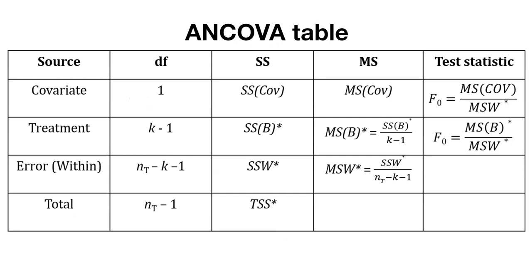Here's the table that tells us the test statistics we're interested in. ANCOVA allows us to carry out two hypothesis tests: one for the covariate and one for the treatment effect, giving us two F statistics. The covariate has one degree of freedom; the treatment has K minus one degrees of freedom, where K is the number of treatments. The error has n_t minus K minus one degrees of freedom, and the total row has n_t minus one degrees of freedom.